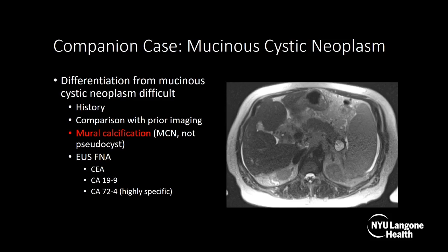Here's a companion case — a mucinous cystic neoplasm. Differentiating a pseudocyst from a mucinous cystic neoplasm can be difficult. You definitely need history: a history of recurrent pancreatitis leads you one way, and a fluid collection that arose during an episode of acute pancreatitis points toward a pseudocyst. Mural calcification is a finding you'll see in a mucinous cystic neoplasm but not a pseudocyst. FNA can also help, with amylase seen in a pseudocyst and CEA, CA-19-9, and CA-72-4 seen in a mucinous cystic neoplasm.